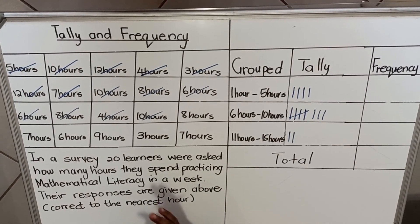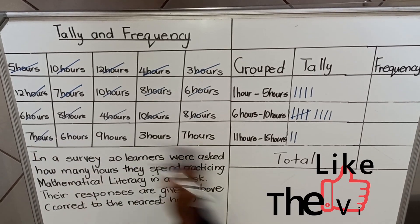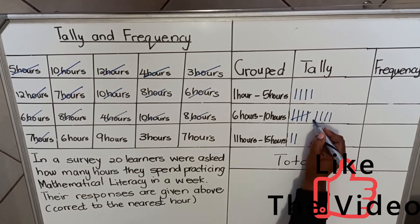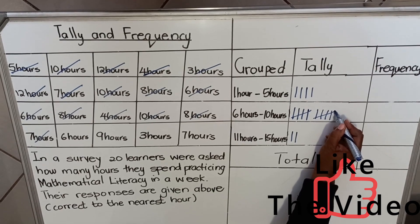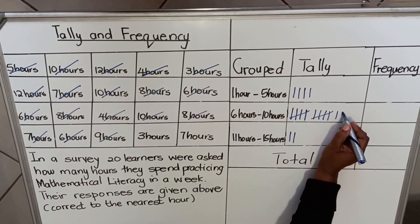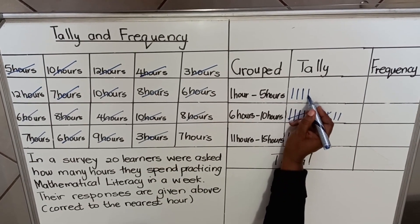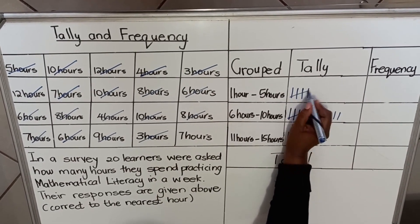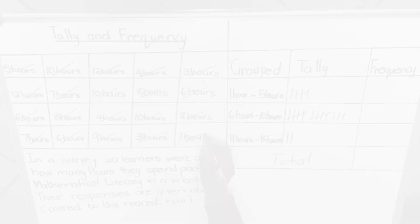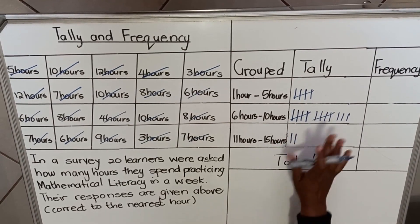Six hours goes in that category, eight hours in the fifth category, four hours, ten hours — I'm canceling them out so I don't repeat any value twice. Then eight hours again, seven hours — one, two, three, four, and the fifth one crossed. Then six hours, nine hours, three hours — one, two, three, four, five. I've cancelled everything out and the tallies are done.